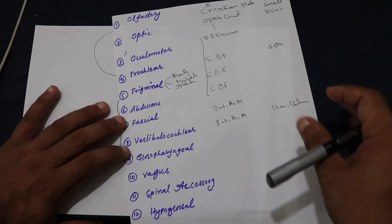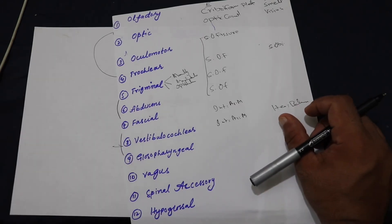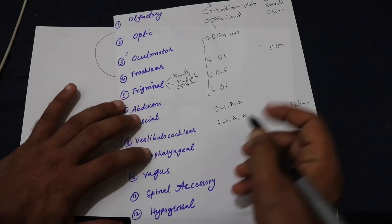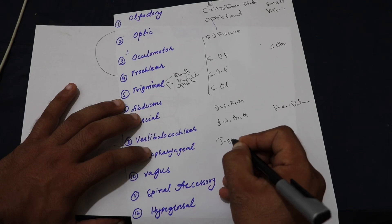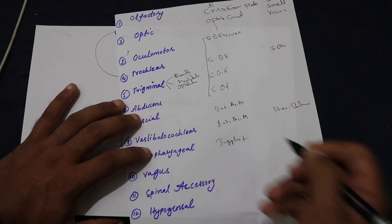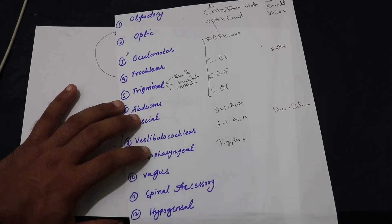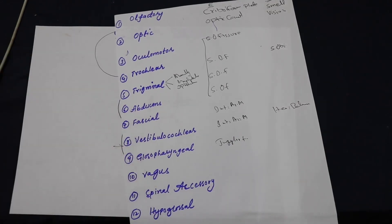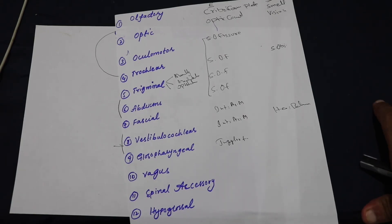Number nine is the glossopharyngeal nerve, which exits from the jugular foramen. It has a vast function: it supplies the posterior one-third of the tongue, the external ear and middle ear cavity, the carotid body and sinuses, and also carries taste sensation from the posterior one-third of the tongue.